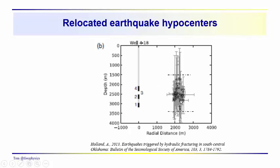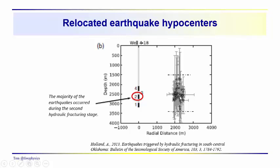With the relocation of these events, we have poor vertical resolution, but most of the events are clustered between 1.5 and 3 to 3.5 kilometers in depth. The majority of events occurred during the stimulation of the second stage. There may have been a direct connection between the stimulation of that stage and some fault or other avenue allowing fluids to migrate and pressures to increase in this region, leading to failure on the fault.